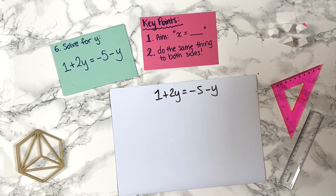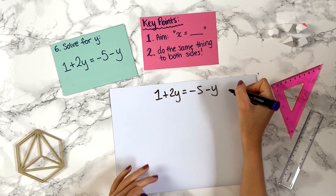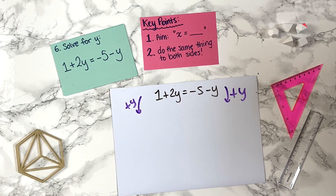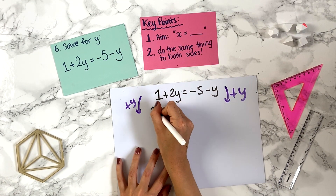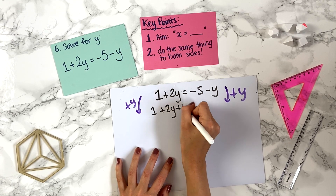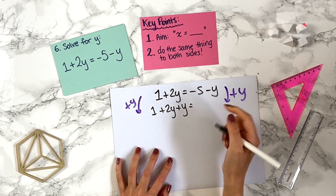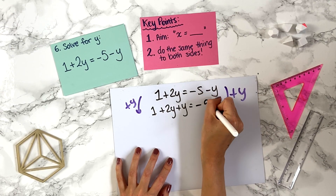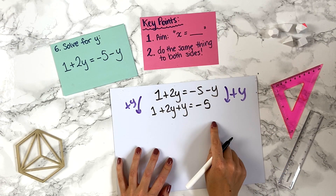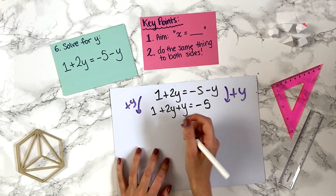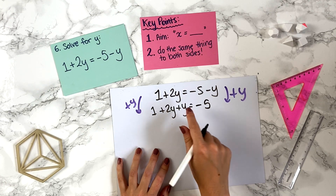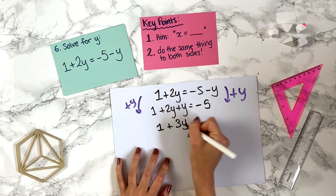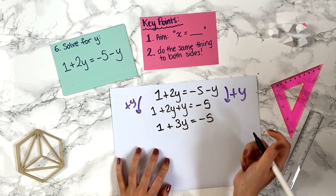We add y to both sides: on the right, minus y plus y cancels to zero, leaving minus 5. On the left, we have 1 plus 2y plus y. We can combine the y terms: 2y plus y is 3y. So we get 1 plus 3y equals minus 5.